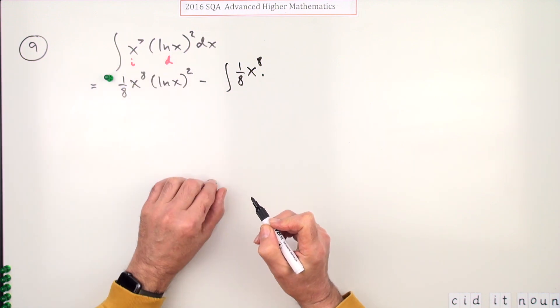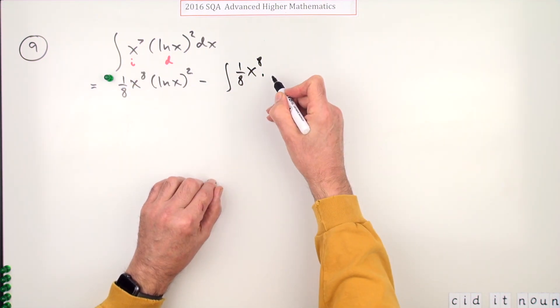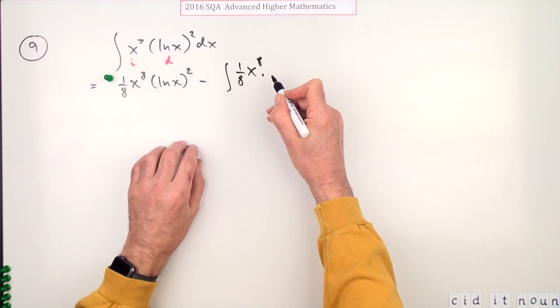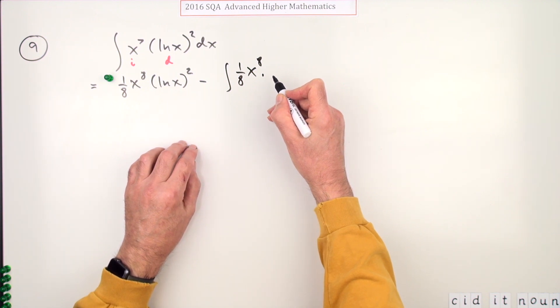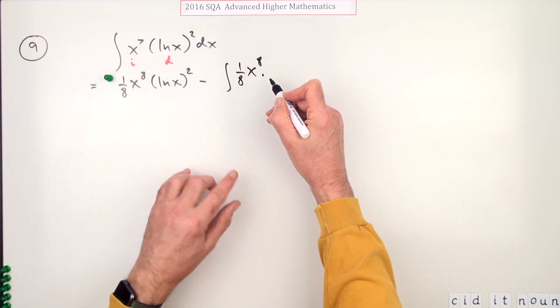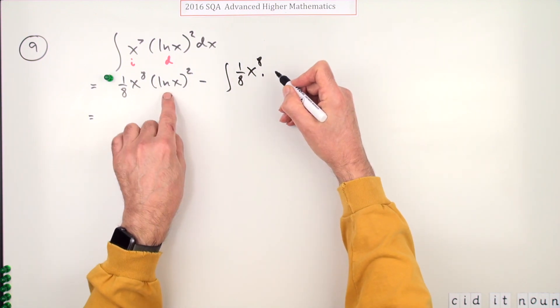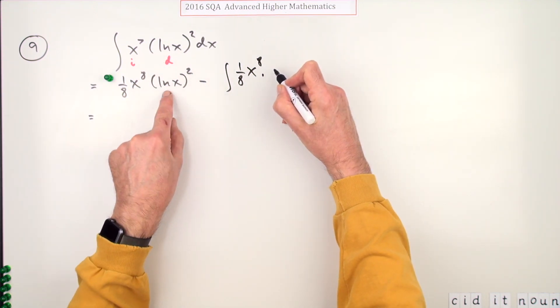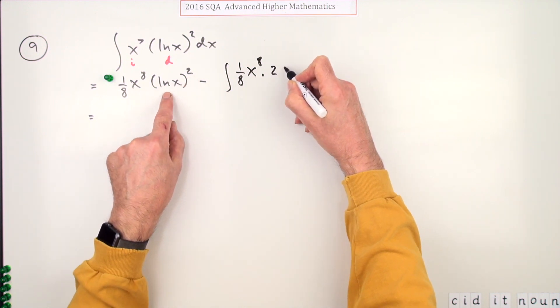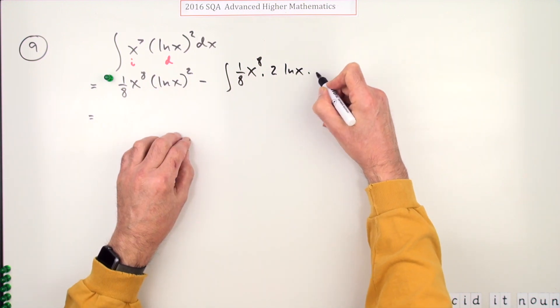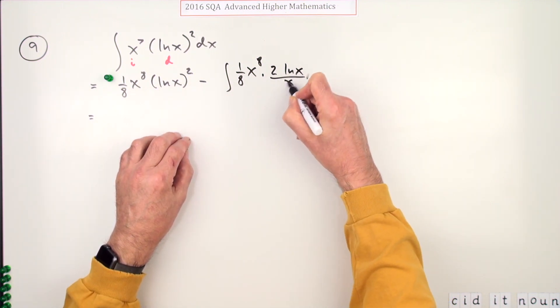Now it's time to differentiate this one. According to the marking scheme, correct choice of functions to differentiate and integrate gives you the second mark, and then it's got the third mark as actually doing this differentiation. So differentiating this, since it's a function of this, it'll be two times that ln x multiplied by the derivative of the inside, which is one over x, so maybe we'll just put that underneath, over x dx.